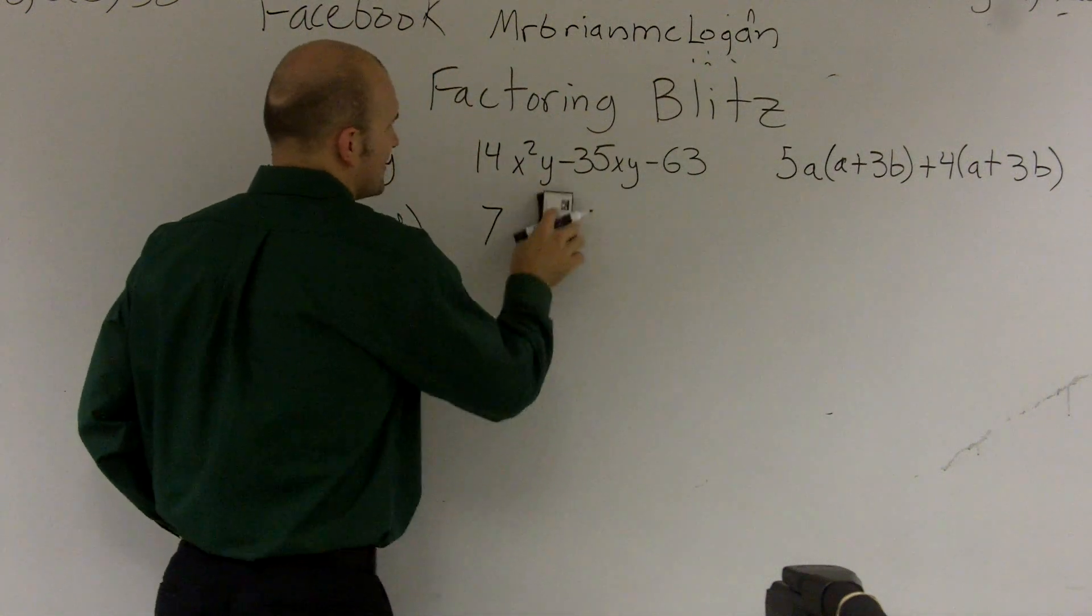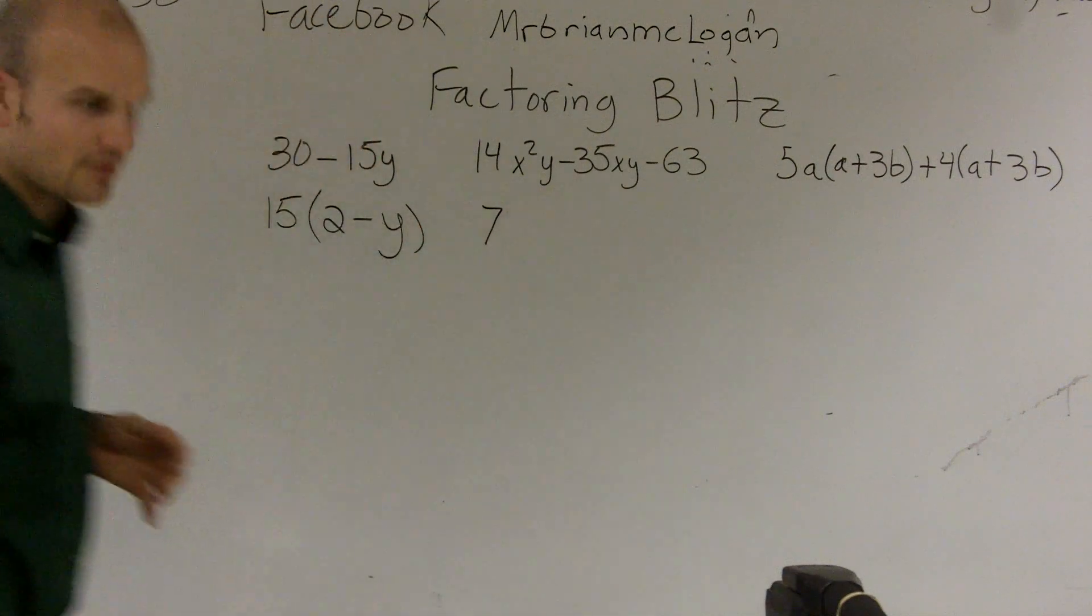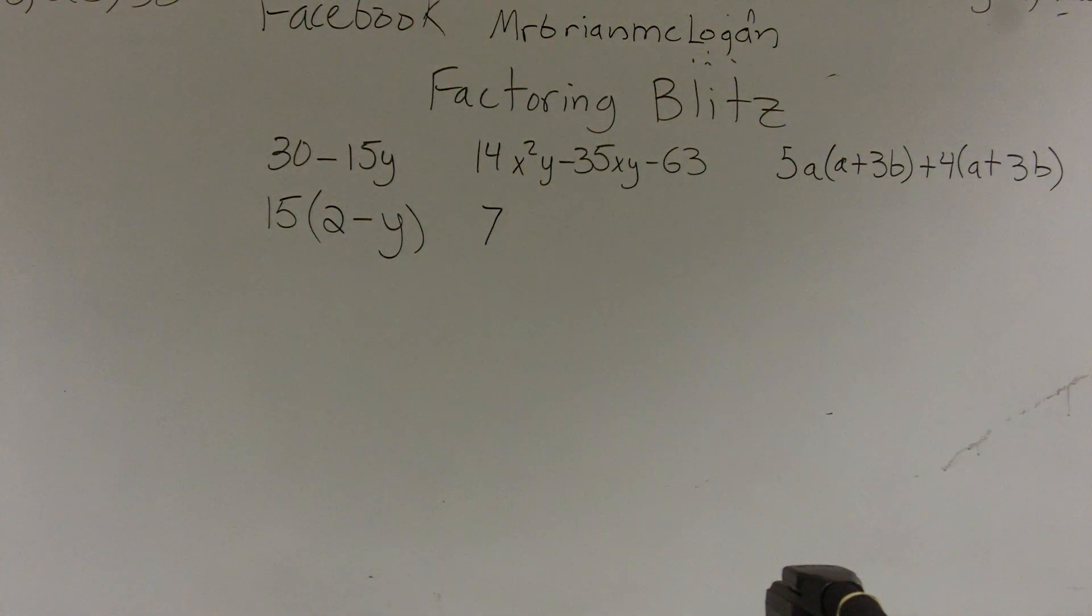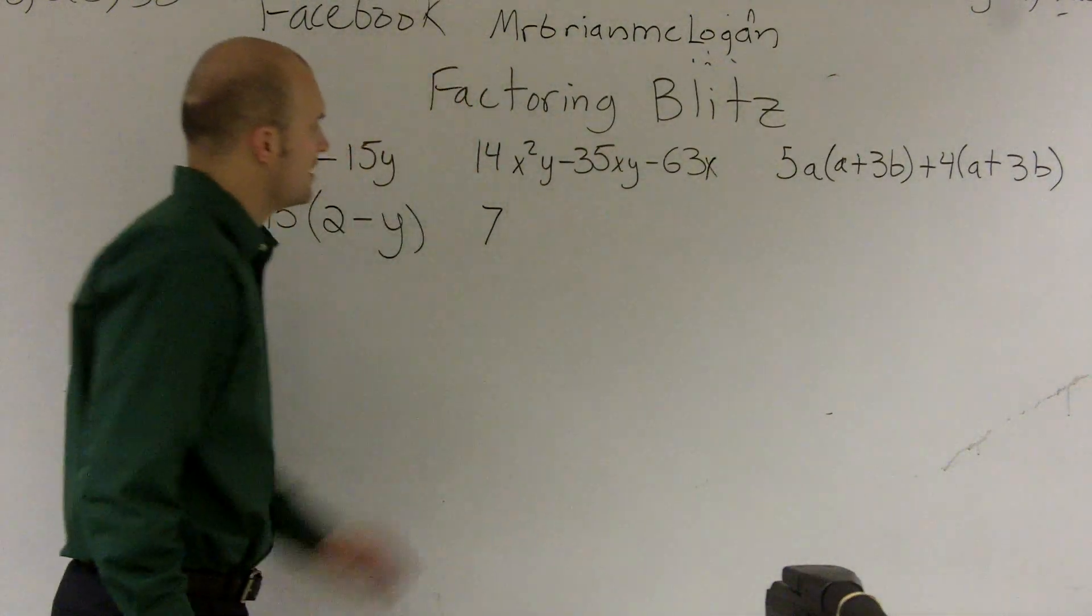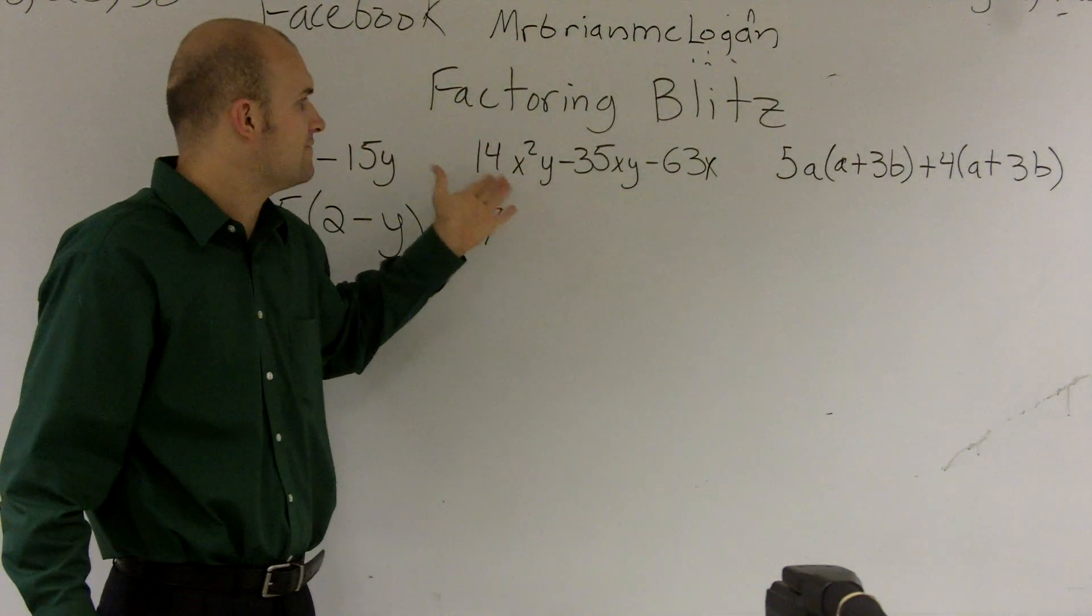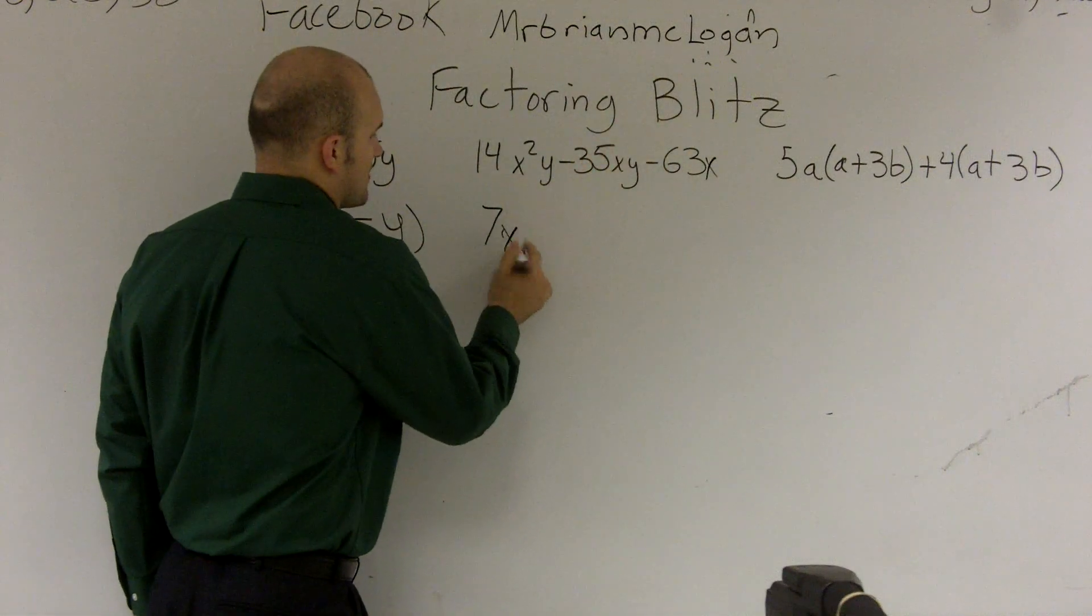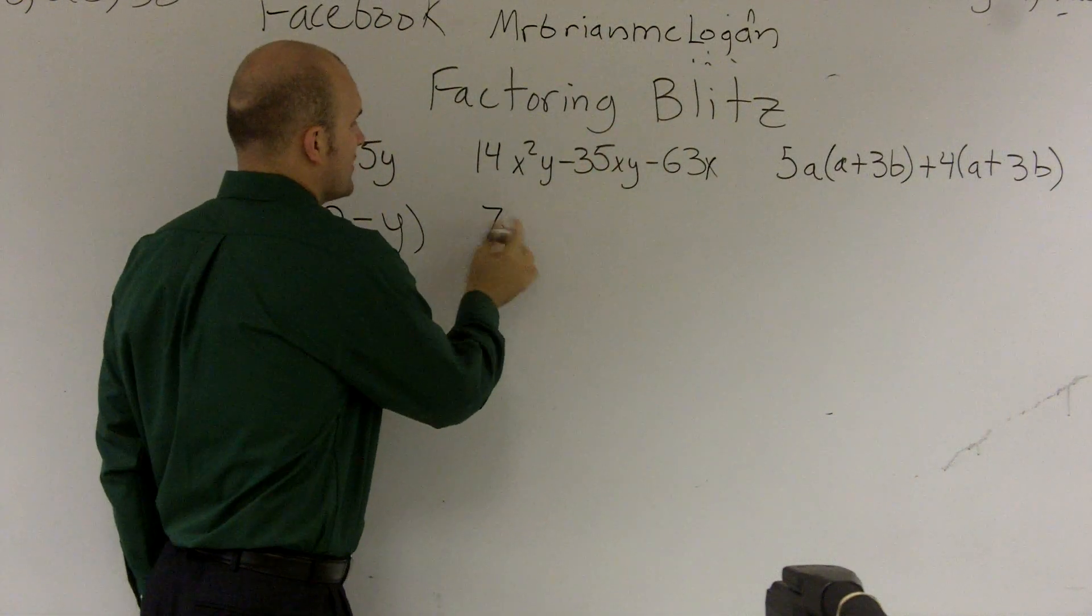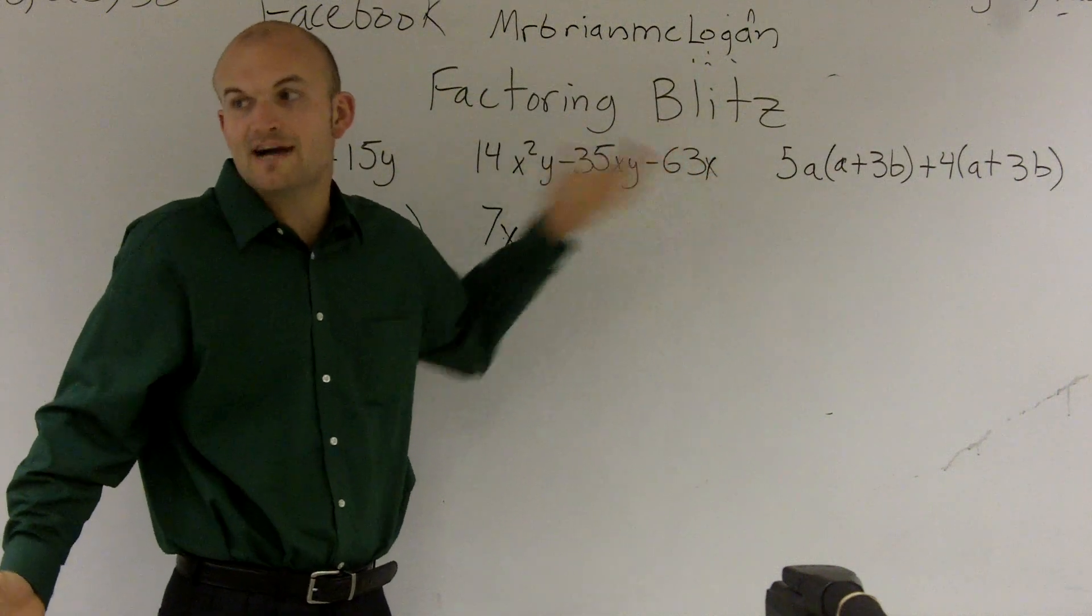Well, did I mess with the problem? Or is that really it? Yeah, it's a 63x, OK. So then I look at this and I say, is there any other variable that they all share? Well, they all share an x, so I can also factor out an x. I cannot factor out a y because 63x does not contain a y value, so I cannot factor one out.